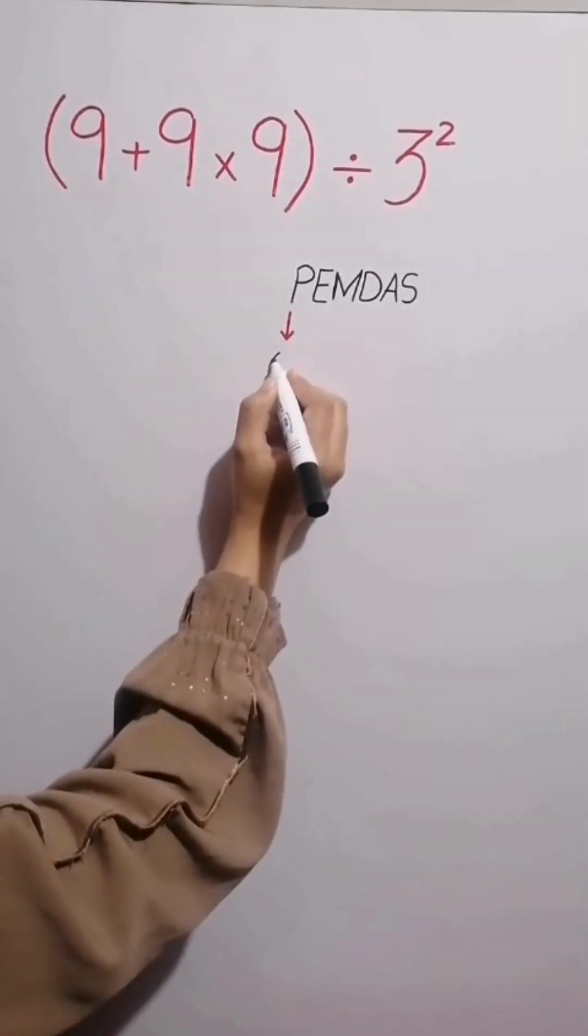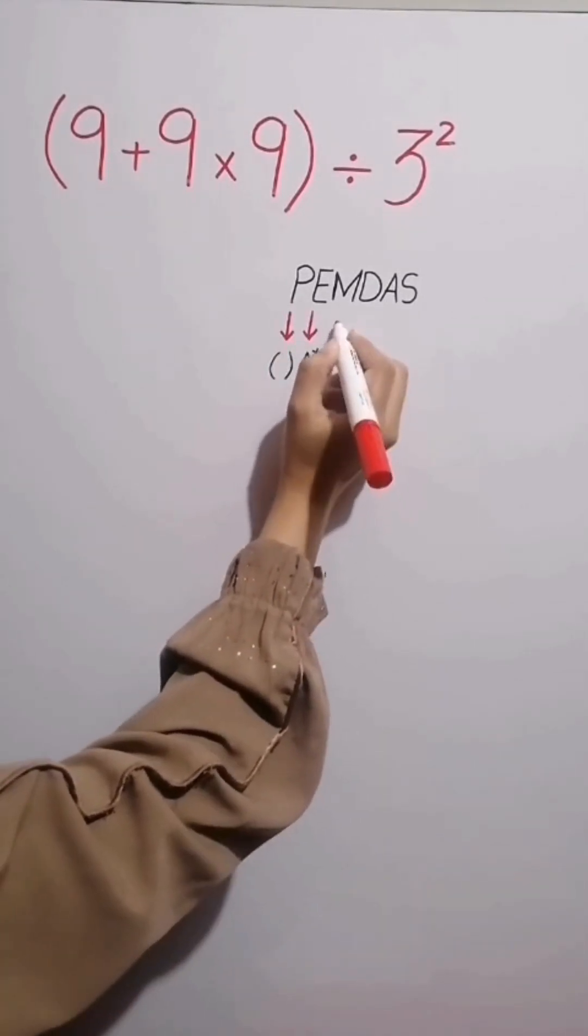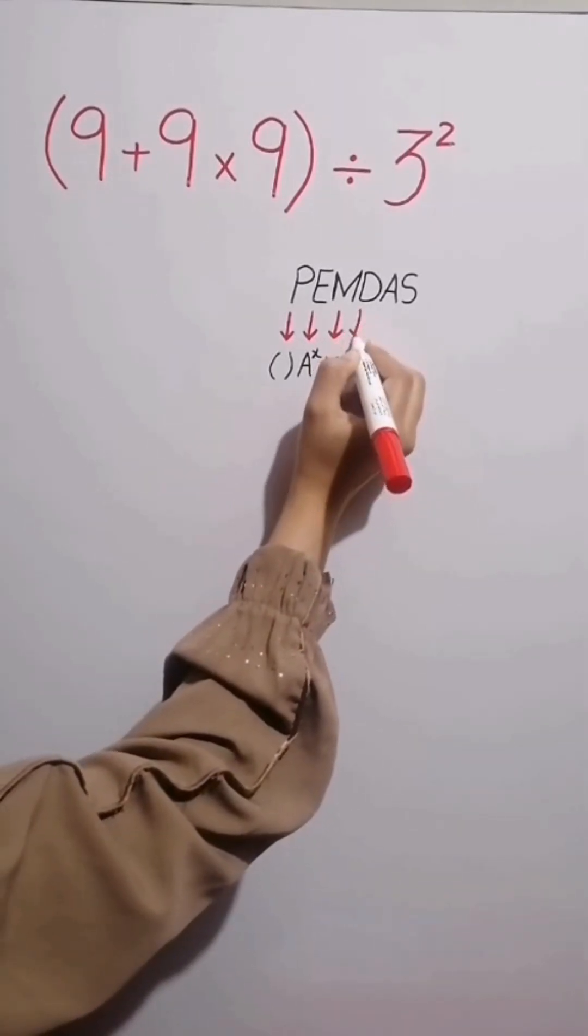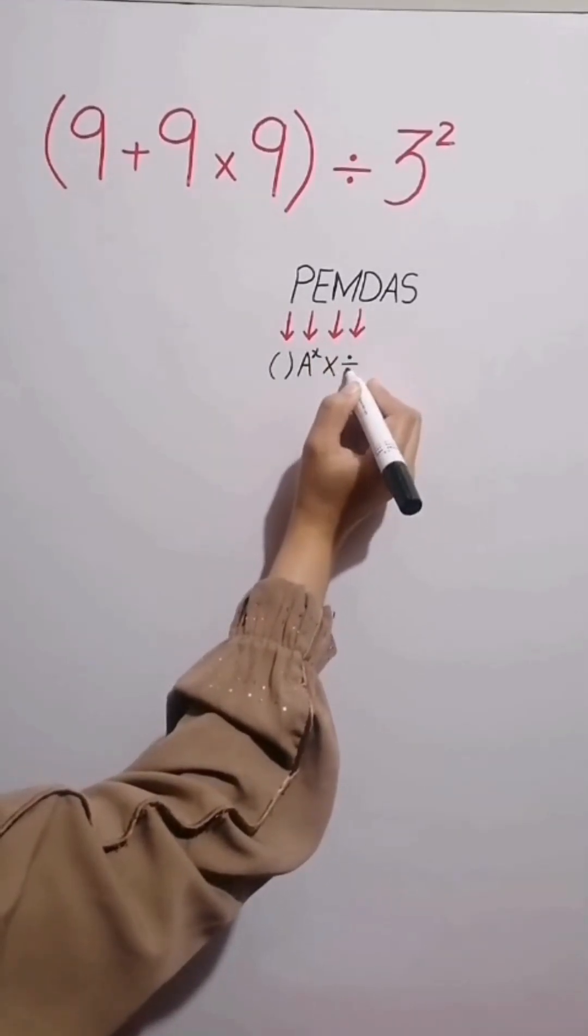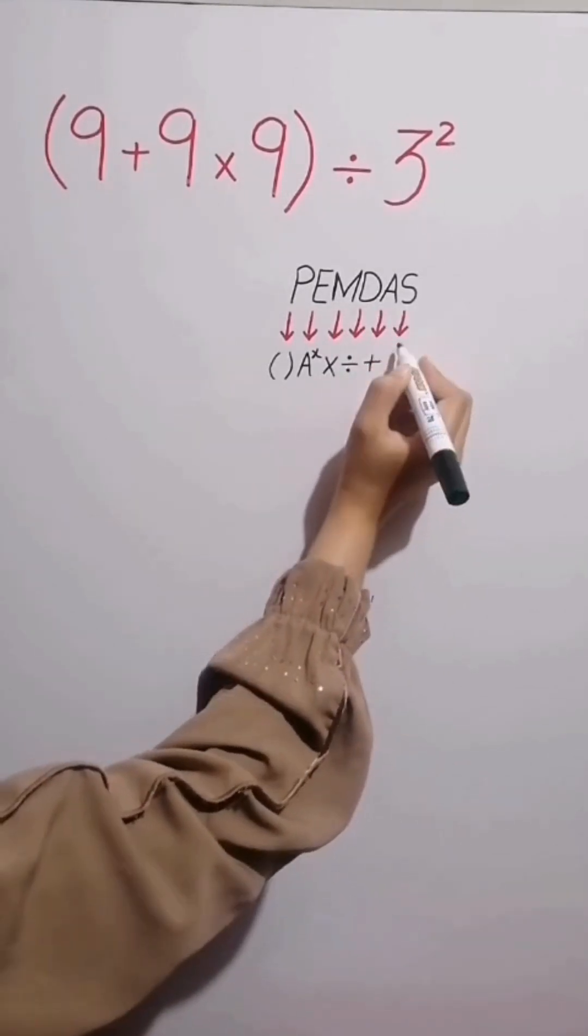P stands for parentheses, E stands for exponent, M stands for multiplication, D stands for division, A stands for addition, and S stands for subtraction.